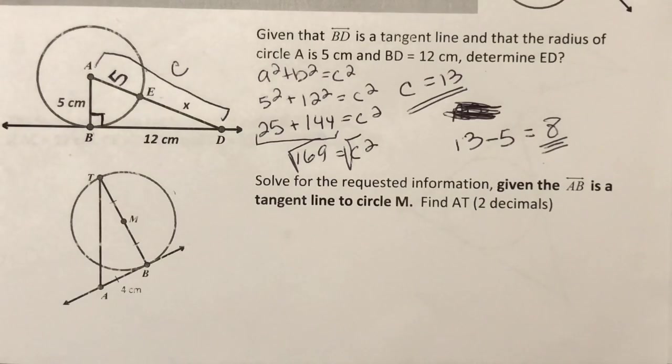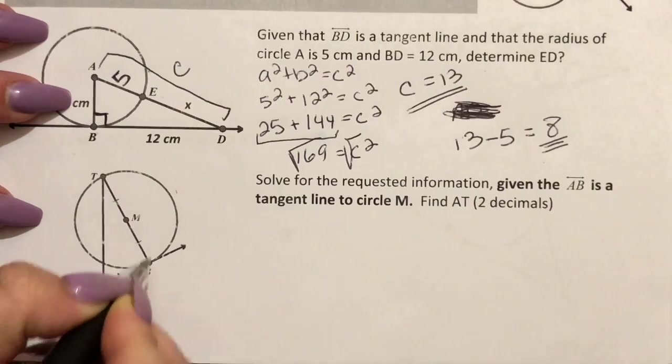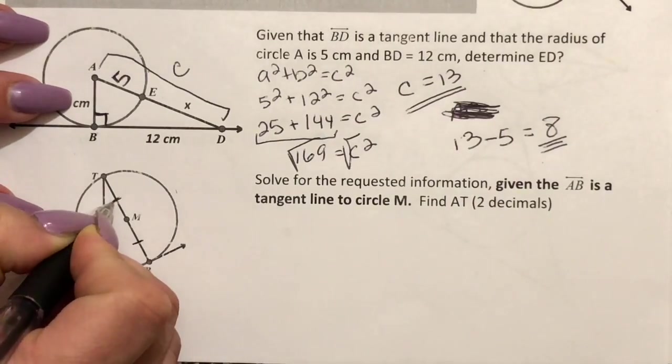In the second problem we are going to use what we know about the radius and a tangent line of a circle to solve the problem. In this one I can also see that the image has given me some additional information here. I can see that I have a little dash here and here.